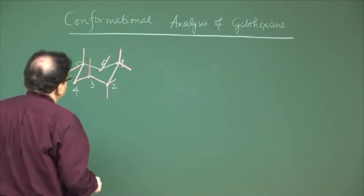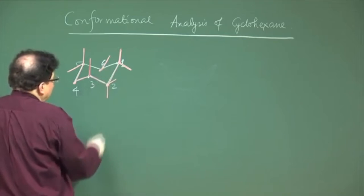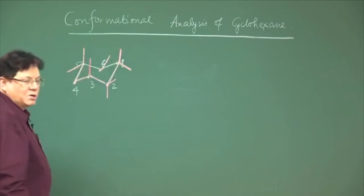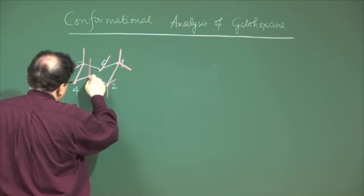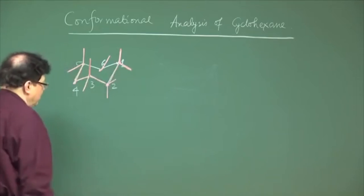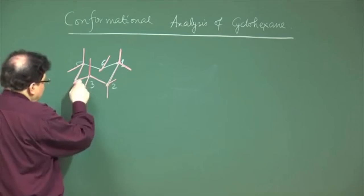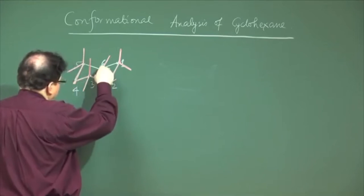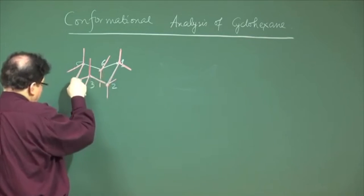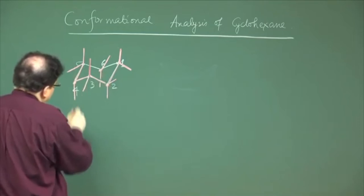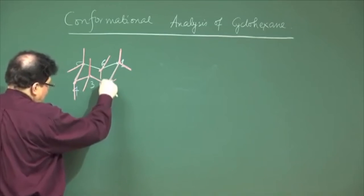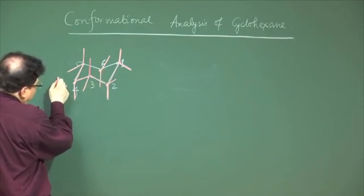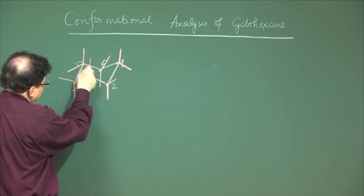These are the characteristics of the chair form: at each carbon there are two sets of substituents. For cyclohexane, these are all hydrogens. At C1, which occupies the top of the chair, the vertical bond goes upward — this is called the axial hydrogen — and the other is called the equatorial hydrogen. So at each carbon there is an axial bond and an equatorial bond.